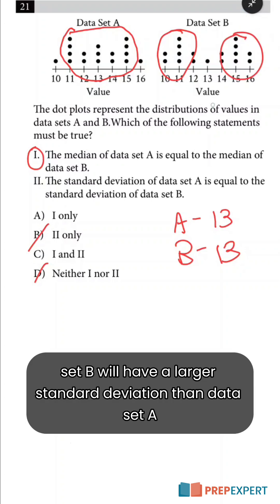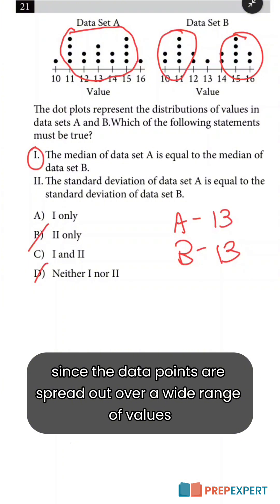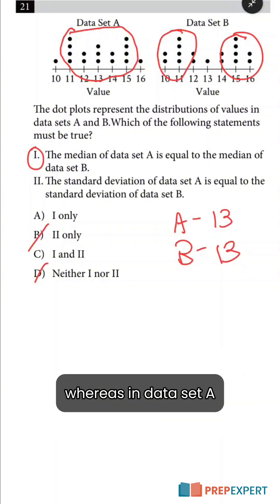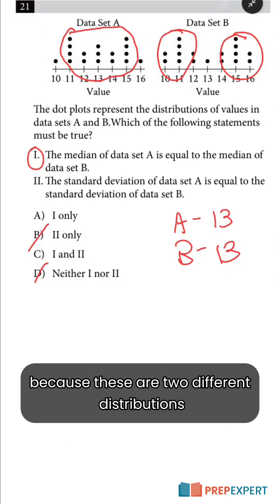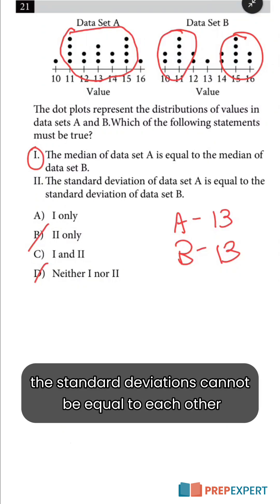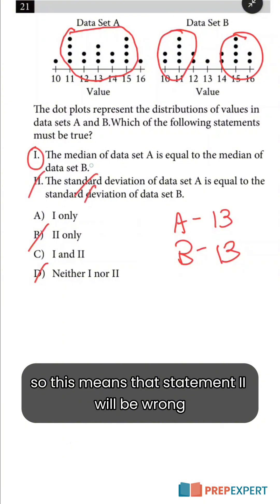This means that data set B will have a larger standard deviation than data set A, since the data points are spread out over a wide range of values, whereas in data set A the data points are more tightly clustered around the mean. Because these are two different distributions, the standard deviations cannot be equal to each other, so statement two will be wrong.